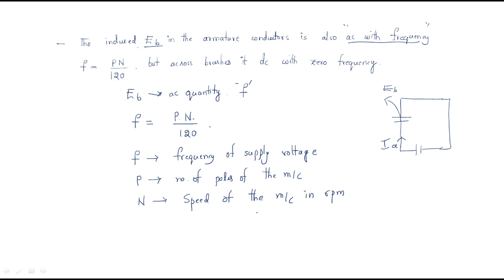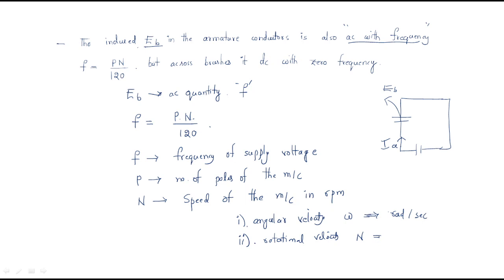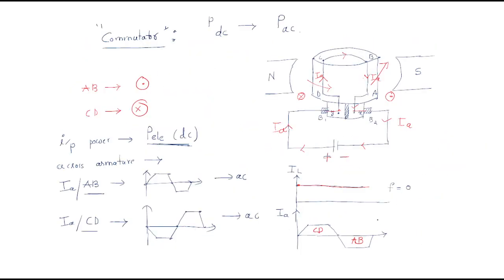There are two types of speeds: angular velocity, represented by Omega (ω) in radians per second, and rotational velocity n in RPM (rotations per minute). These are the complete equations related to the DC motor.